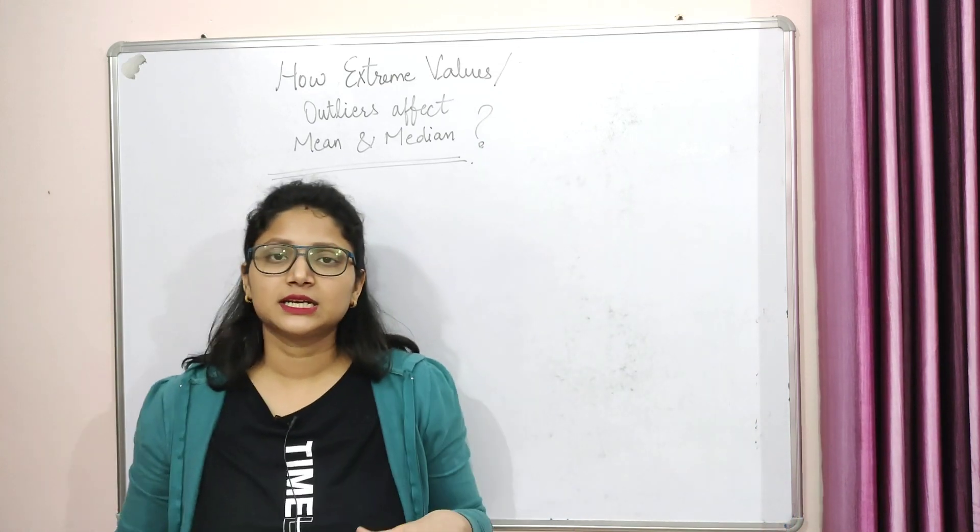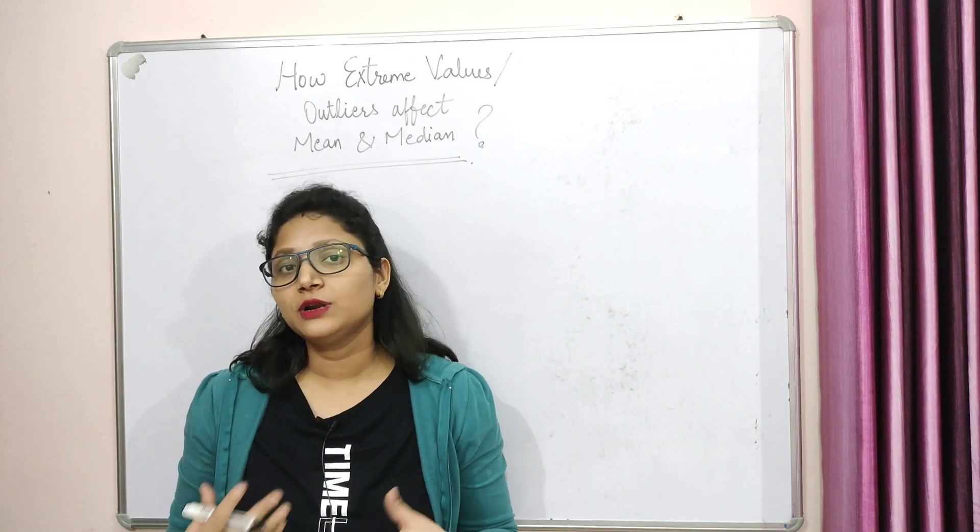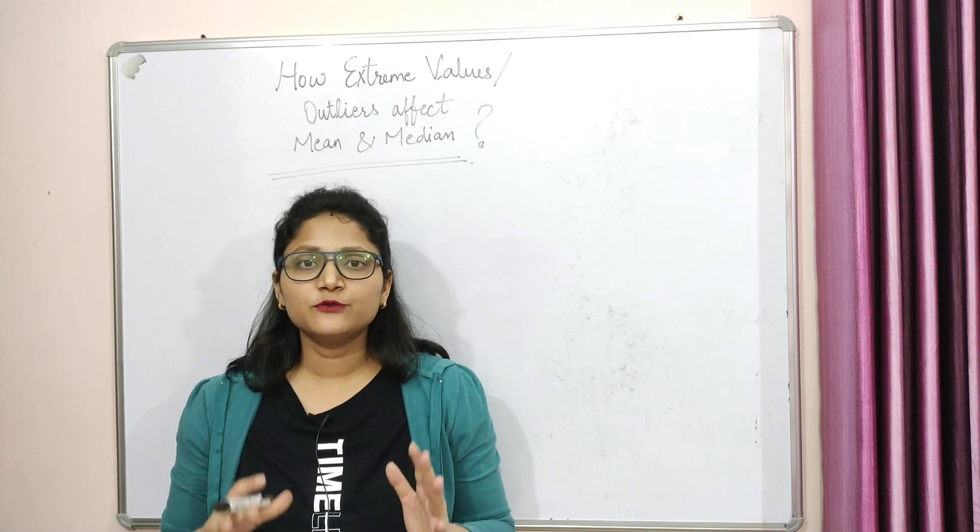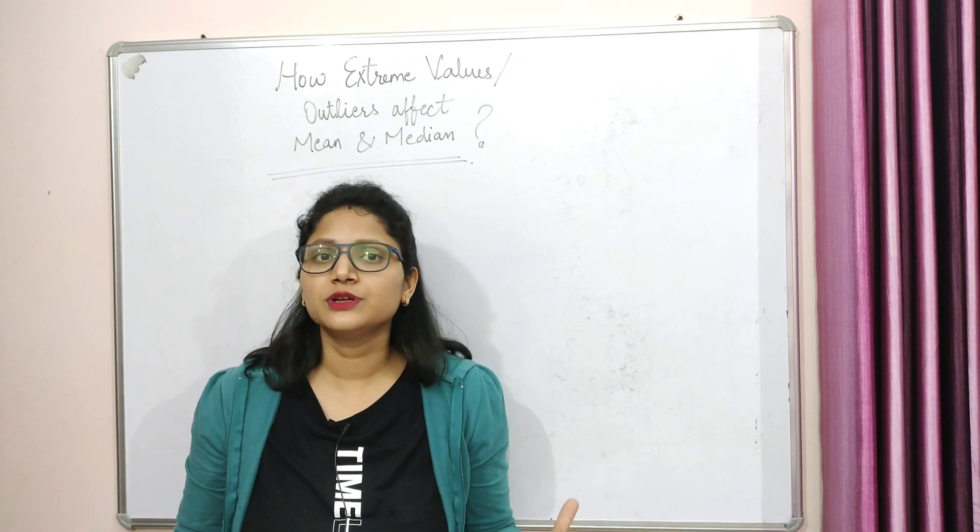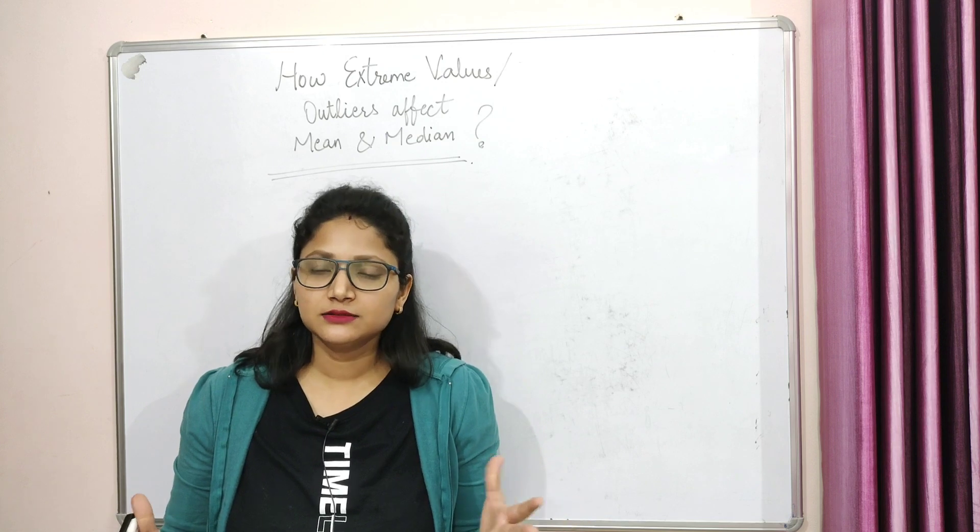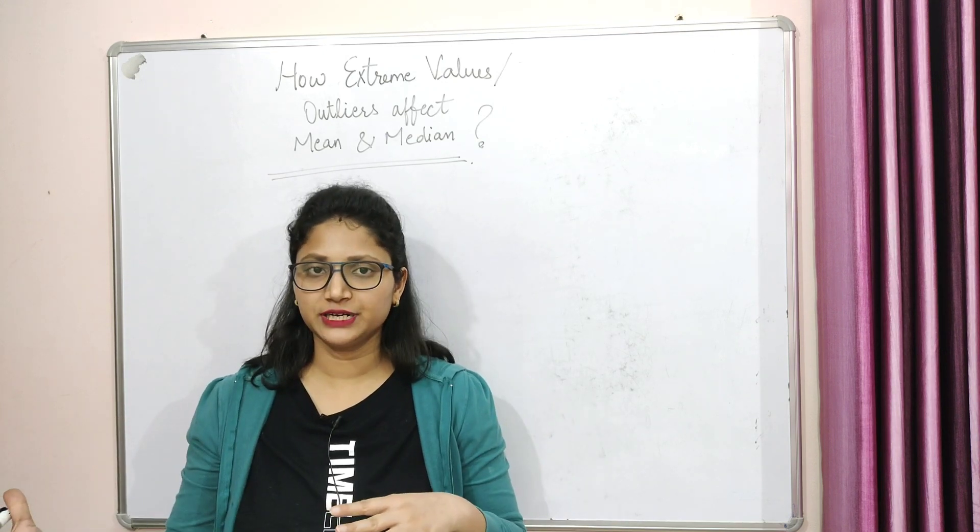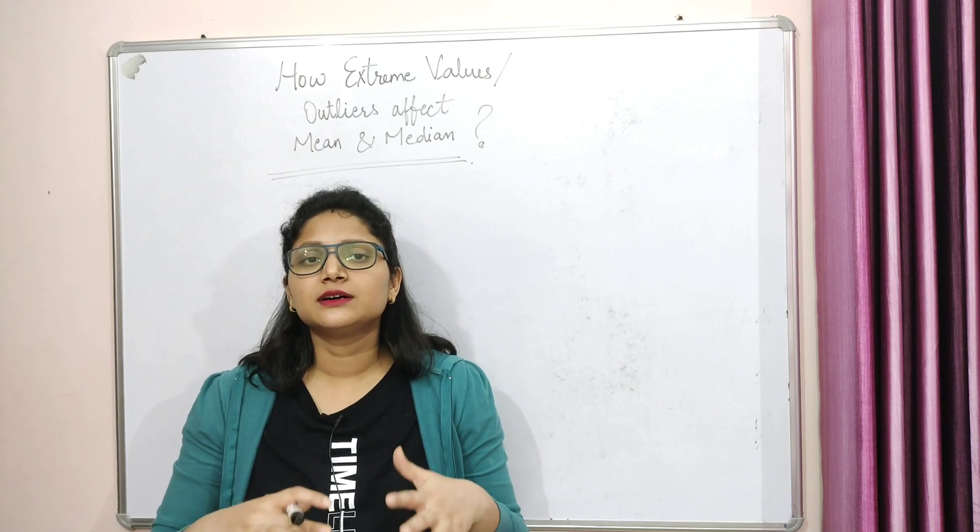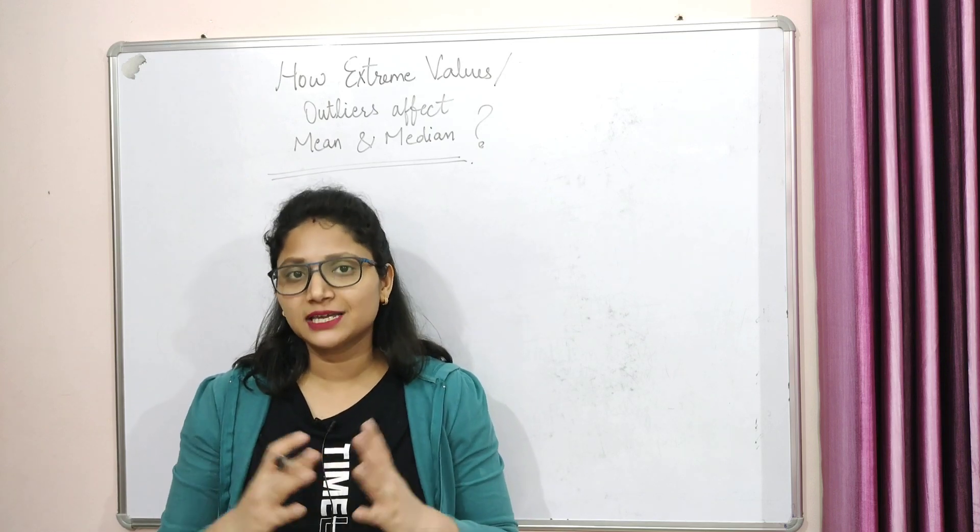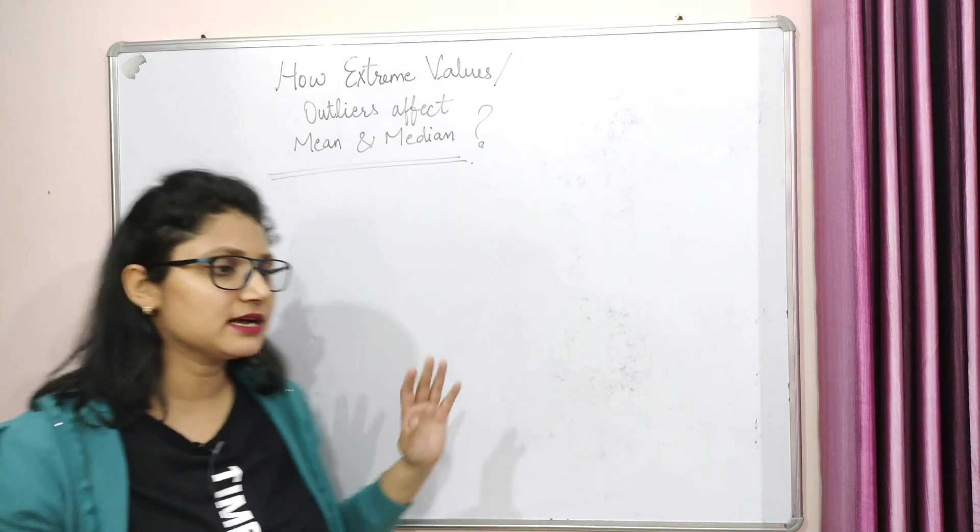So first of all, let's talk about what are extreme values or what are outliers. Basically these values are what you can say are extraordinary values, either on the lower side of your data set or on the higher side of your data set. So these values usually are not consistent with the rest of your values, like I'm going to explain a simple example here.